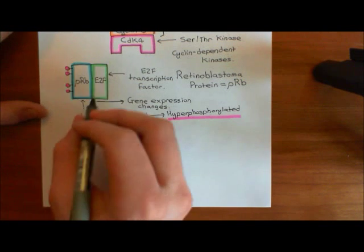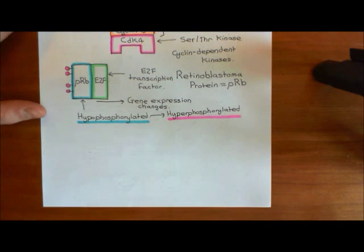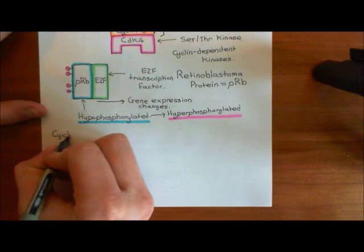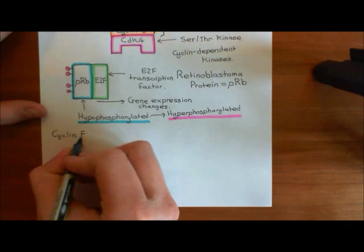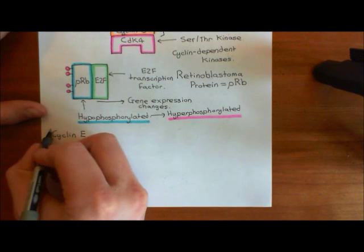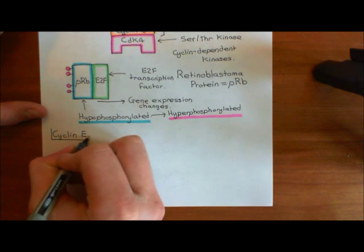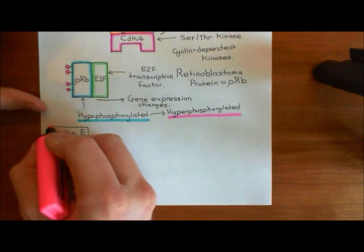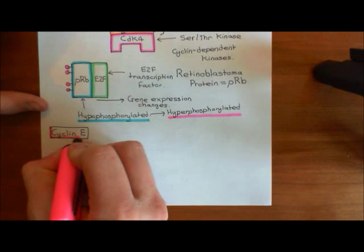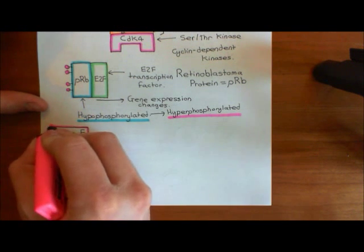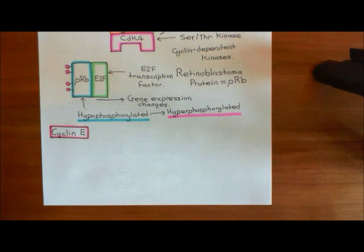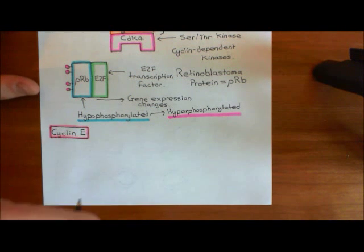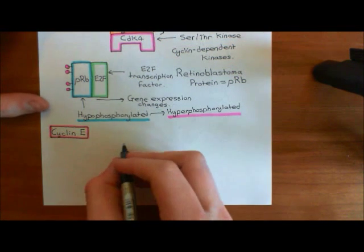Let's look at what the E2F transcription factors are going to result in the production of. One of the first things is cyclin E — another cyclin. E2F transcription factors are going to activate the production of cyclin E, which I'll colour in pink. Cyclin E is going to bind to another cyclin-dependent kinase enzyme, and this cyclin-dependent kinase complex will then cause the initiation of DNA replication.